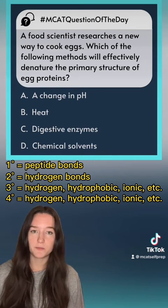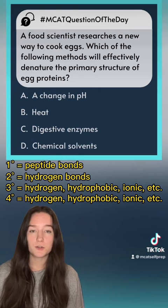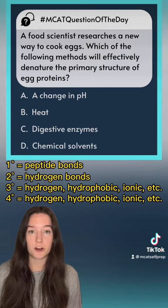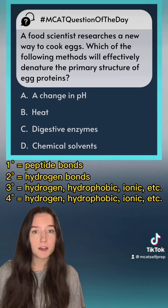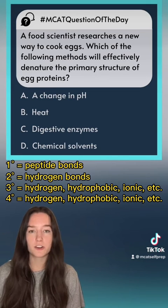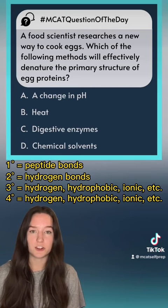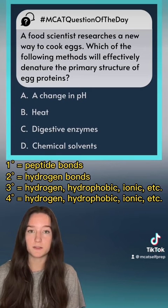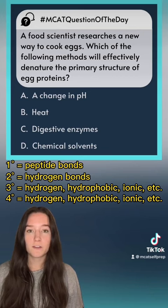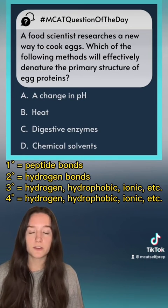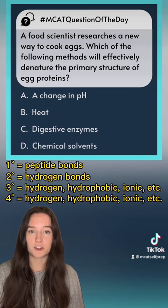Then we have digestive enzymes. Enzymes are going to lower the activation energy needed to break apart strong bonds, so that peptide bond holding together the primary structure can be denatured with the presence of digestive enzymes. And last but not least, we have chemical solvents. Chemical solvents are going to affect the hydrogen bonding, so they are going to denature secondary, tertiary, and quaternary structures.